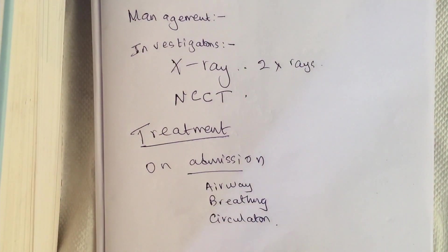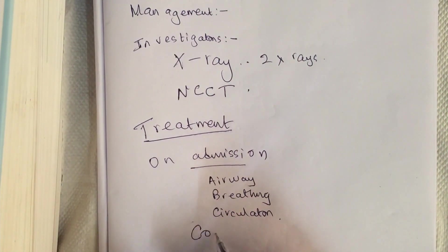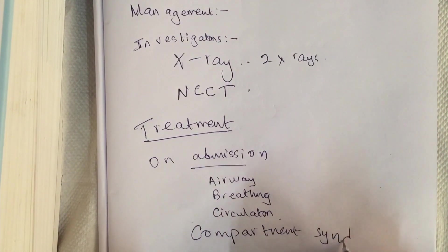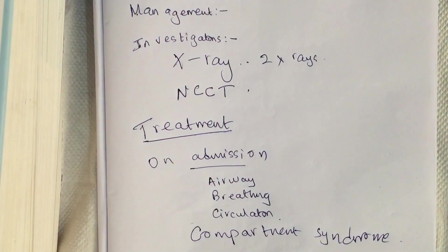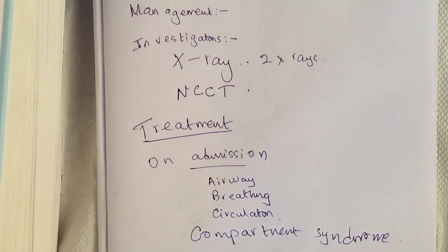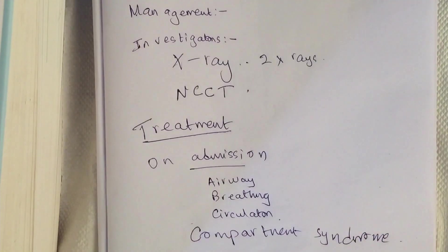Check for limb circulation and distal neurological status. Check for compartment syndrome — this is very important. Give analgesics for pain management according to the pain ladder. Clean the wound thoroughly with normal saline after removing any visible foreign bodies. Give prophylaxis for tetanus — tetanus toxoid injection — and for gangrene prophylaxis, ensure early and adequate wound debridement and leave the wound open. Start the patient on broad-spectrum antibiotics to control any infection.